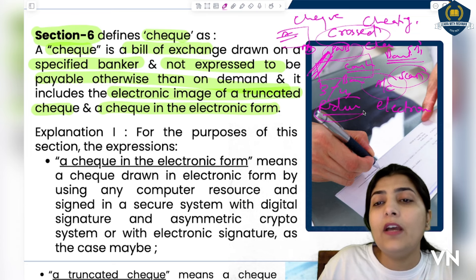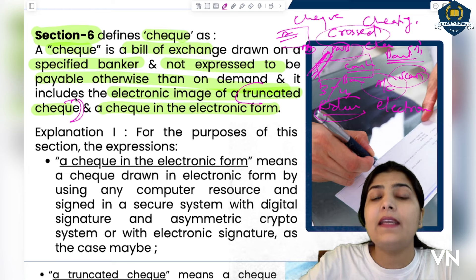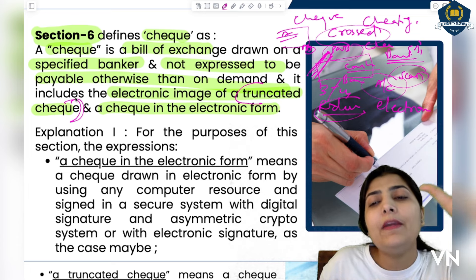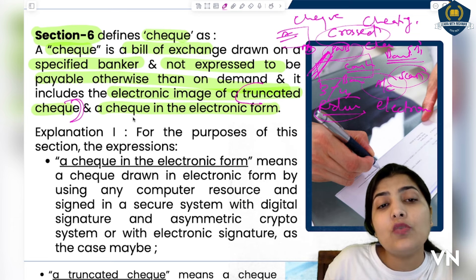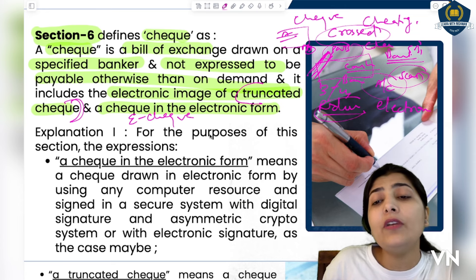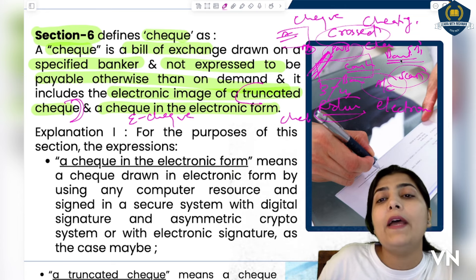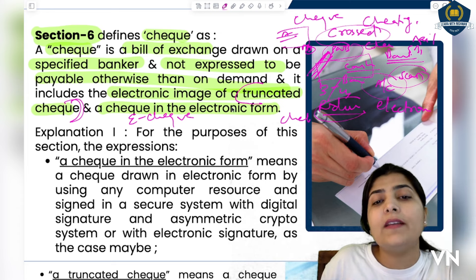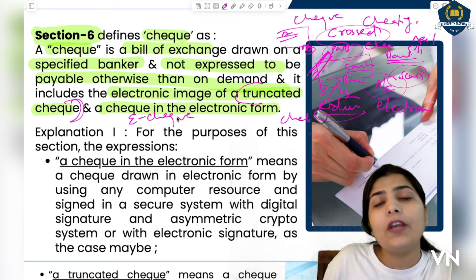To reduce the delay, what was done is that an electronic image of the cheque was made — the cheque was scanned and sent electronically, so payment could be processed faster. This reduced the time significantly. The physical form of the cheque was replaced with an image form. This scanned image is called a truncated cheque, and cheques that are available on electronic/computer systems are called cheques in electronic form.